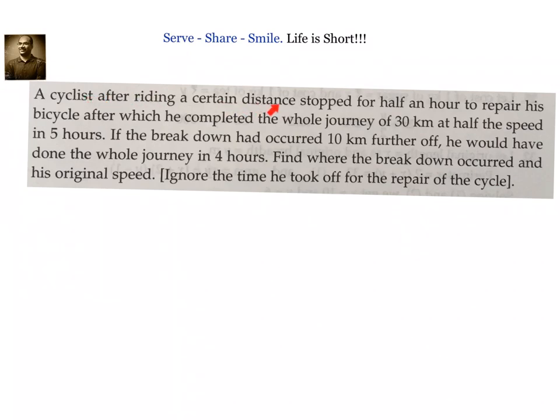A cyclist after riding a certain distance, so we have to find out this distance. Let the distance where the breakdown occurred be equal to x kilometers and original speed be y kilometers per hour. We will write down original speed equal to y kilometers per hour.